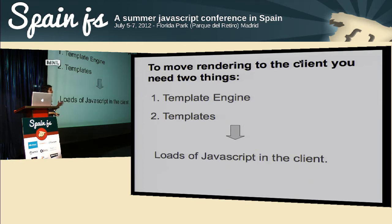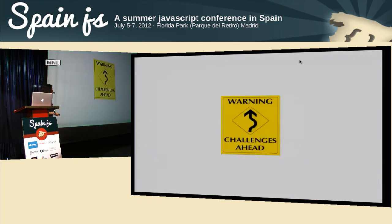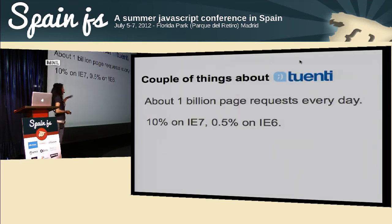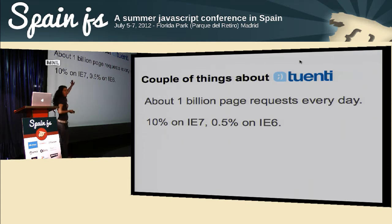This means you need a template engine and templates, so you need loads of JavaScript in the client that you didn't have before. If you already have loads of JavaScript in the client, you start thinking there may be some issues — more JavaScript in the client may mean performance problems. Let me frame what Tuenti does to show the relevance of this problem: we serve about 1 billion page requests every day.